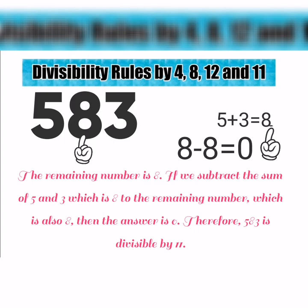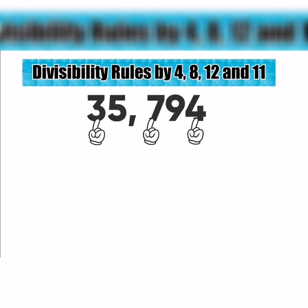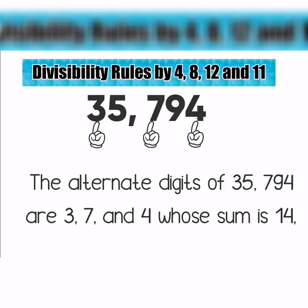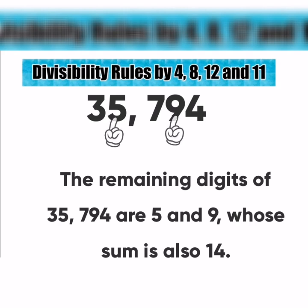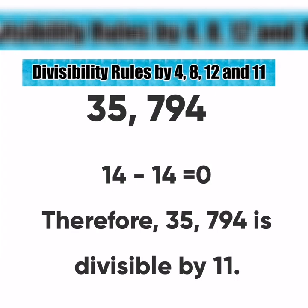Let's have another example. Is 35,794 divisible by 11? The alternate digits of 35,794 are 3, 7, and 4, whose sum is 14. The remaining digits of 35,794 are 5 and 9, whose sum is also 14. If we subtract 14 from 14, it equals 0. Therefore, 35,794 is divisible by 11.